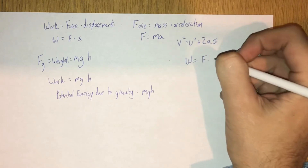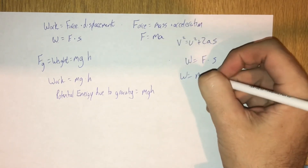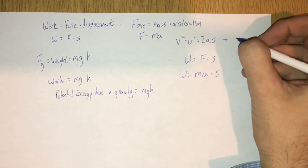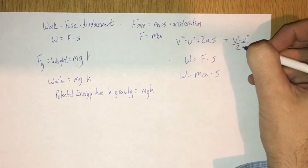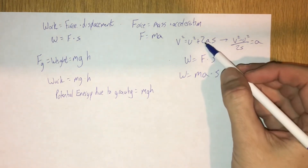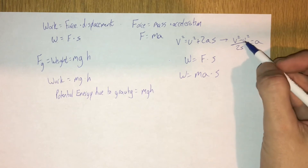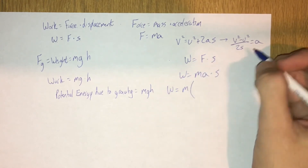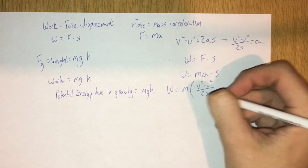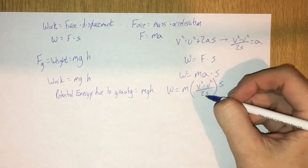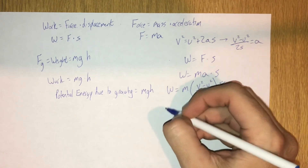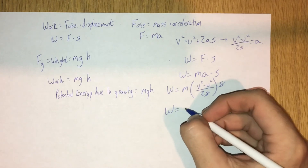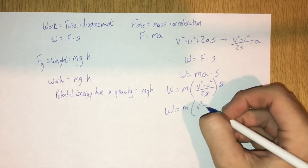We have work equals force times displacement, and from Newton's second law we know that force is mass times acceleration, still times displacement. And we know if we reorganize the fourth equation of motion, we could say that v squared minus u squared over 2s is equal to a. So if we substitute this in for acceleration, the work done is equal to mass times (v squared minus u squared over 2s) times the displacement s. Here we can see that s divided by s is going to be 1, and the work done in moving an object from initial speed u to final speed v is equal to m times (v squared minus u squared) over 2.